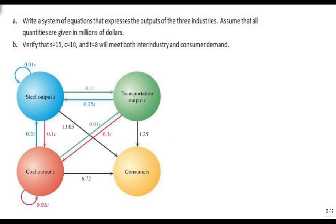What we want to do is we want to set up a system of equations where we're going to start with S. So this steel output is equal to, it feeds some to itself, 0.01s, it's going to feed some to t, so plus 0.1t, some to coal, plus 0.1c, plus 13.05. And this is in millions of dollars that we're talking about. So this is how much output comes from our steel.